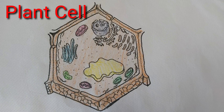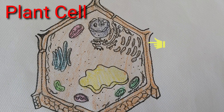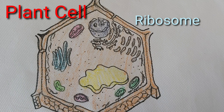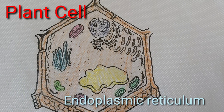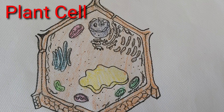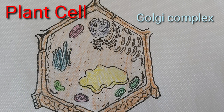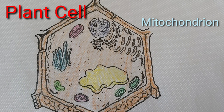Plant cells contain the following organelles: nucleus, cell membrane, ribosome, endoplasmic reticulum, cytoplasm, chloroplast, vacuole, Golgi complex, mitochondrion, and cell wall.